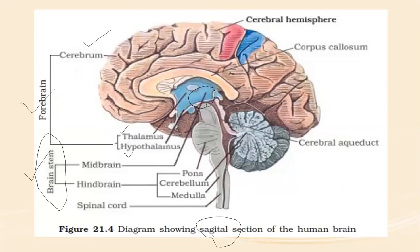The hindbrain comprises PCM — pons, cerebellum, and medulla. The brain stem is a structure connecting the brain with the spinal cord. The corpus callosum is a nerve fiber connecting the left and right hemispheres — it is the longest such fiber connecting the two hemispheres.